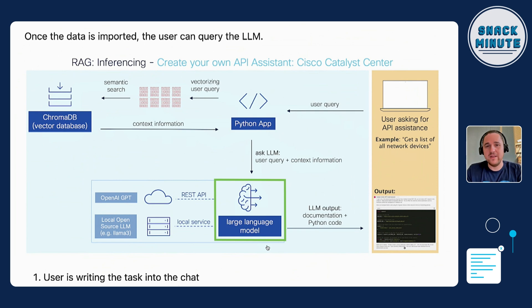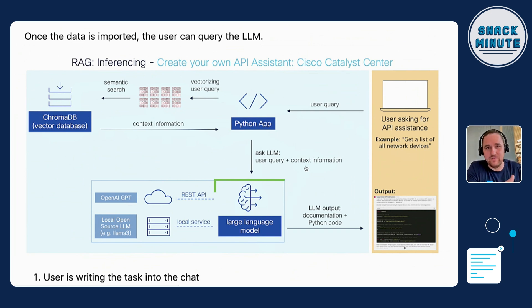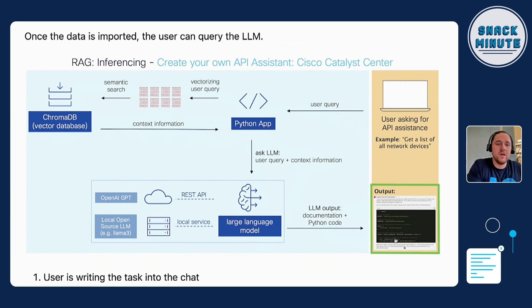The user query and the context information from the ChromaDB are then put into the large language model. The cool thing is the LLM is not dealing with old data — it's actually dealing with the latest data. I'm putting the latest API specification of Catalyst Center into it, and it creates the specific Python code and adds documentation to it.